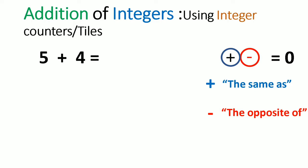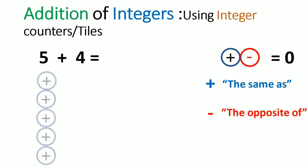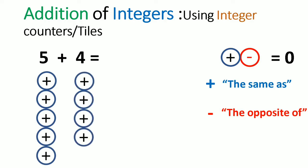If I had 5 plus 4, I would represent this equation with 5 positive integer counters and 4 positive integer counters. When we sum the total amount of integer counters, we would get 9. So 5 plus 4 equals 9.